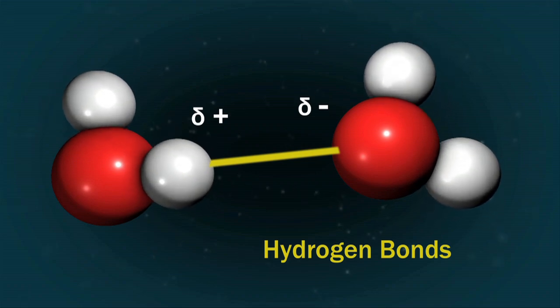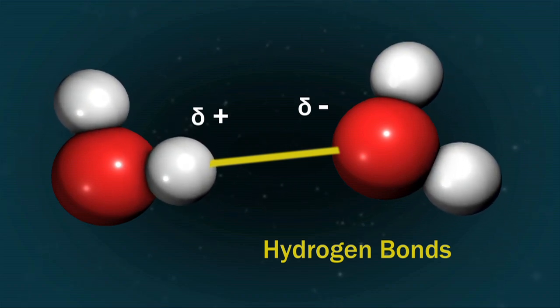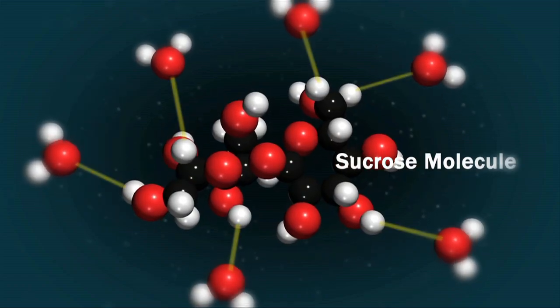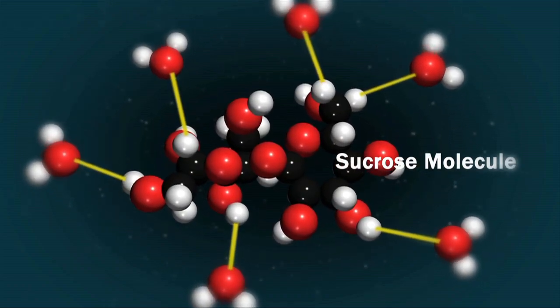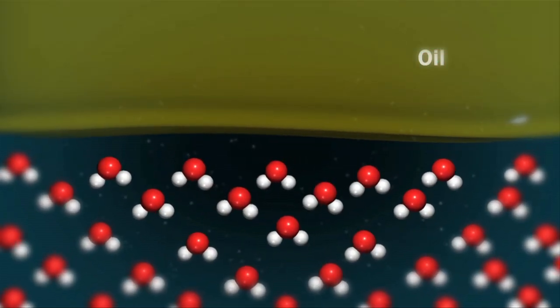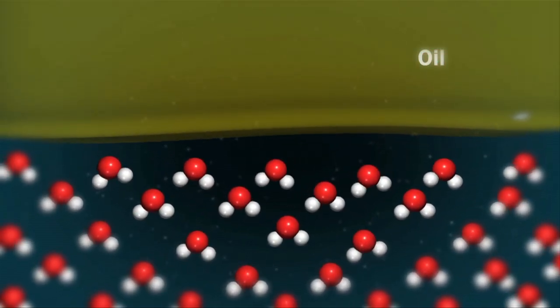Water can make hydrogen bonds with any polar molecule that has these partial charges. Water dissolves polar substances like sugar because it makes hydrogen bonds with them. Non-polar substances like oil cannot make hydrogen bonds and do not dissolve in water.